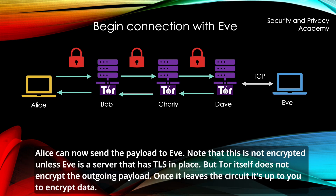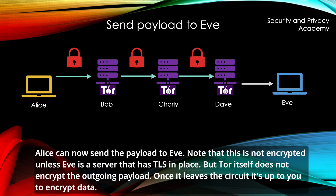Alice can now send the payload to Eve. Note that this is not encrypted unless Eve is a server that has TLS in place. TOR itself does not encrypt your outgoing payload — once it leaves the circuit, it's up to you to encrypt the data.